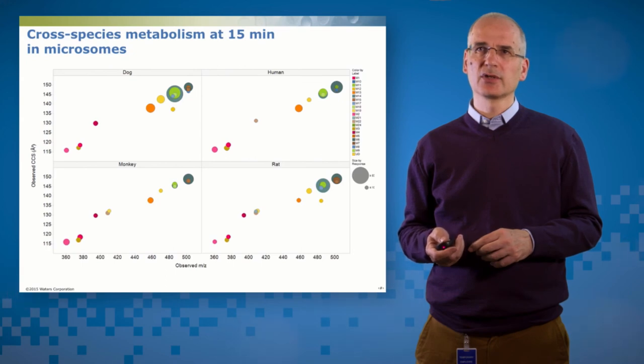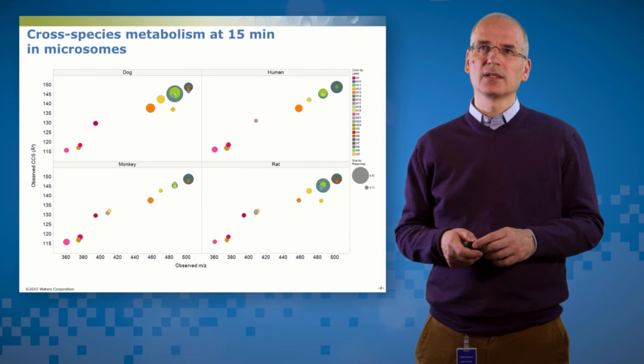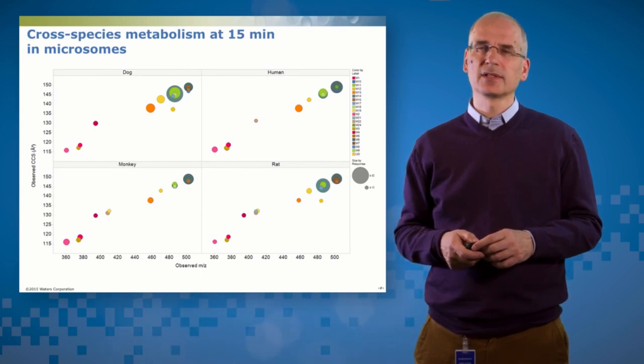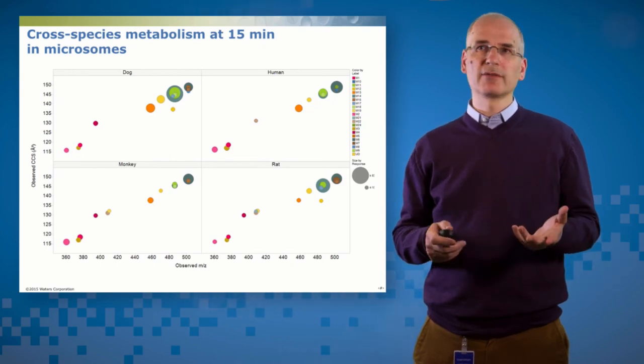And you can see up at top right in each of these, where I've got my double hydroxylations, I've got multiple entities, multiple double hydroxylations, which are discriminated on the basis of their CCS value. And similarly, here, you can see those ketone metabolites of nefazodone having very, very different CCS values. So that's one way of looking at it.